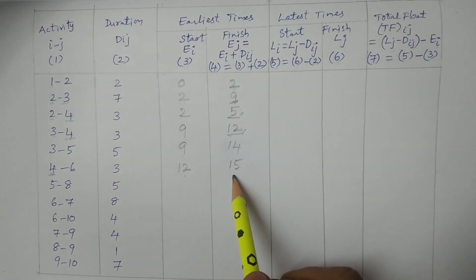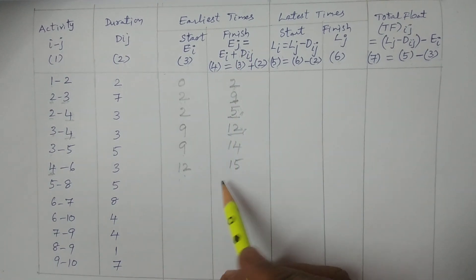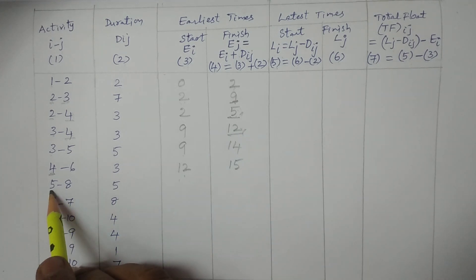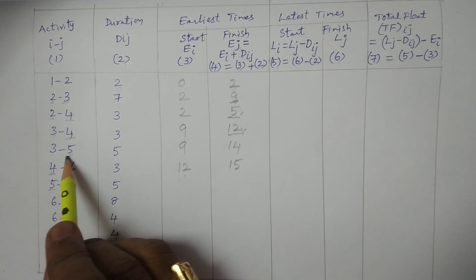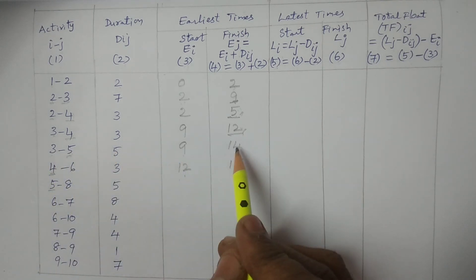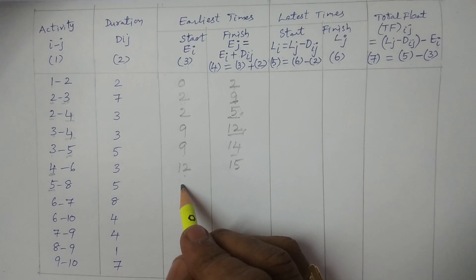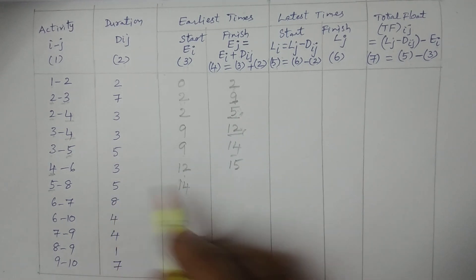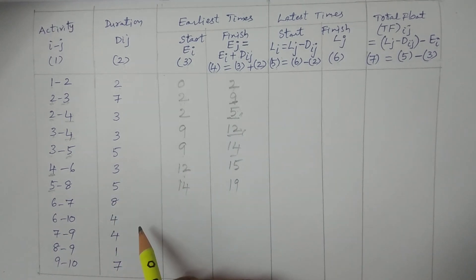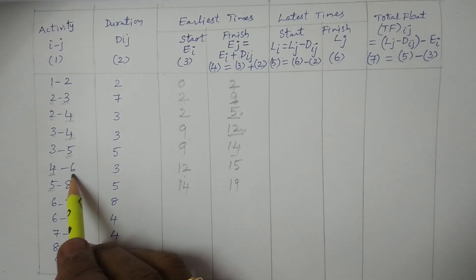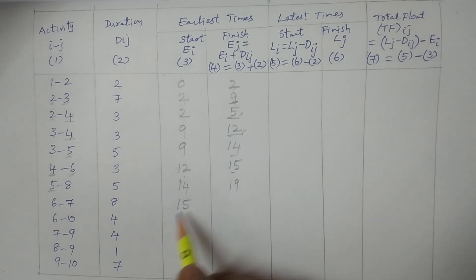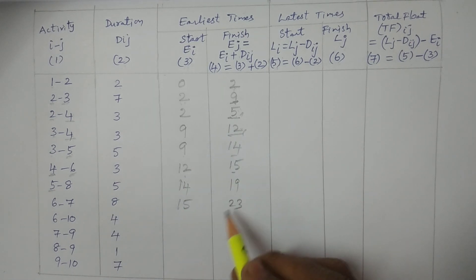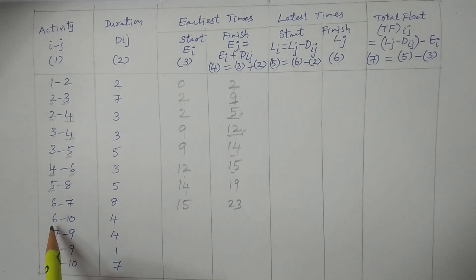For E5: J equals 5, from 3 to 5, only one value — 14. So E5 is 14. 14 plus 5 equals 19. For event 6: from 4 to 6, only one value — 15. 15 plus 8 equals 23. Then 6 to 7 and 6 to 10, both from node 6: value is 15. 15 plus 4 equals 19.